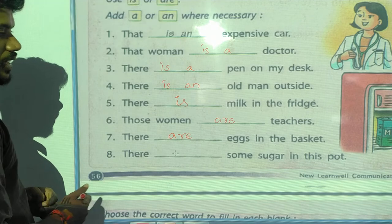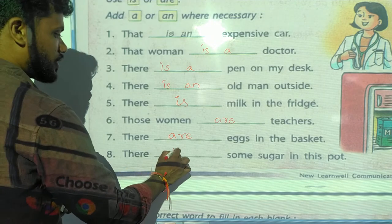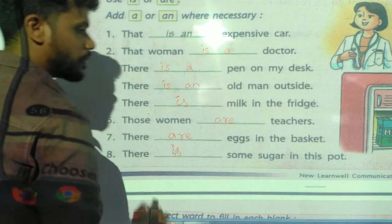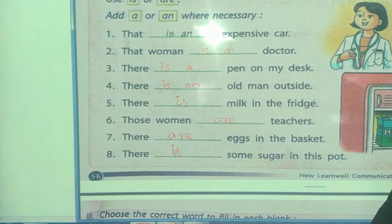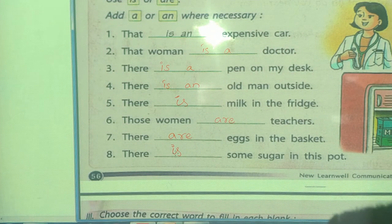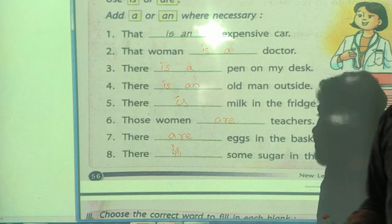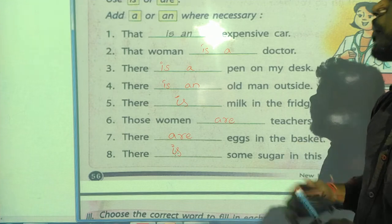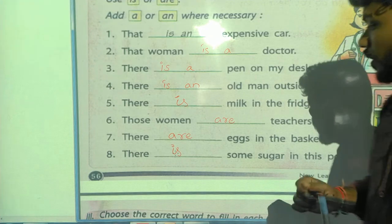There is some sugar in this pot. So where we have to write 'is', 'and', or 'a' — this is compulsory and we have to remember it. Understand?